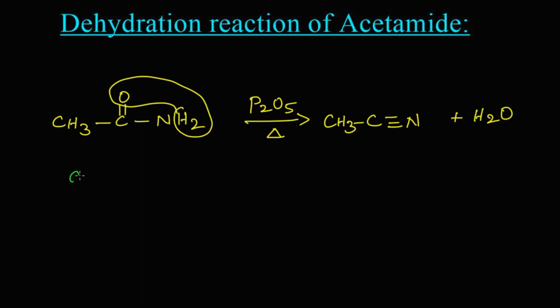This is acetamide. On heating with P2O5, we get methyl cyanide or acetonitrile.